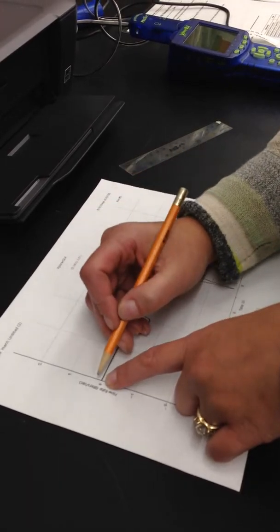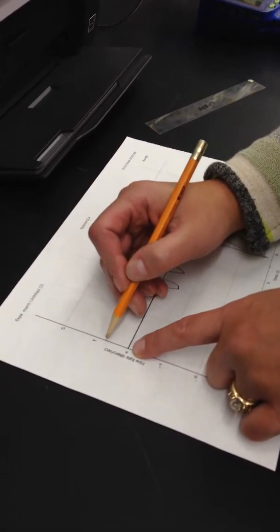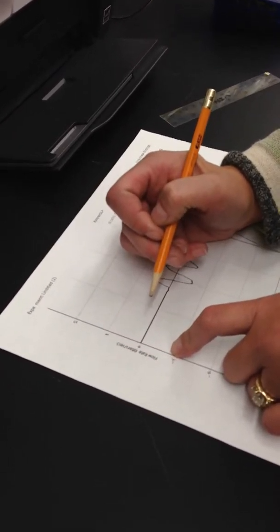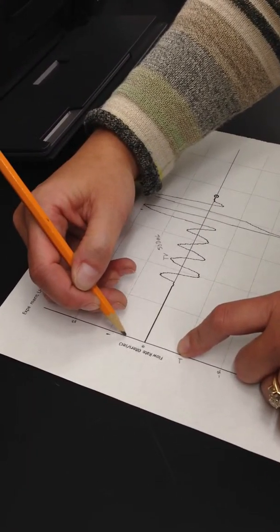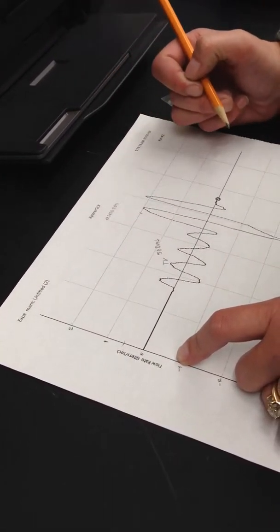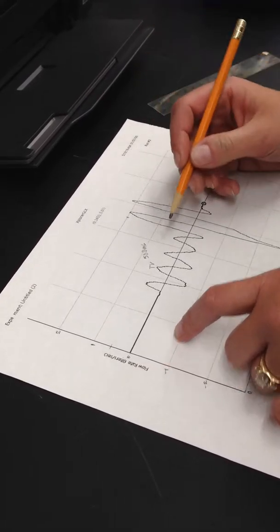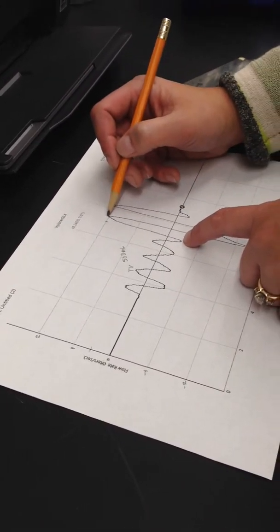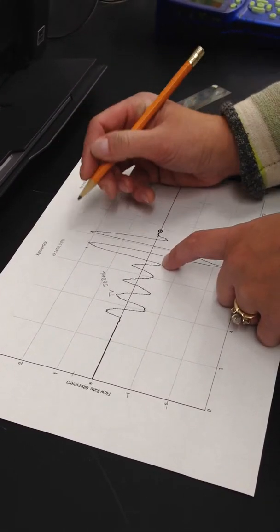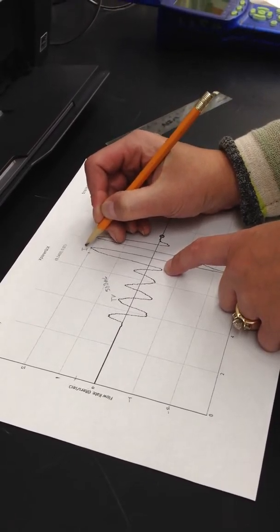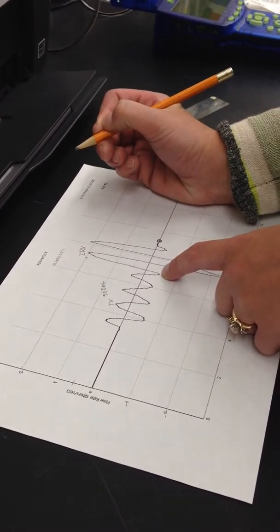Over here our scale is 0, 1, 2. And this is liters per second. And so as you can see about halfway up is about 500 milliliters. Now, when you forcefully breathe in, that is called your inspiratory reserve volume.